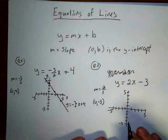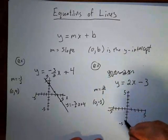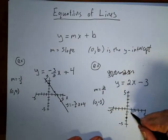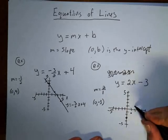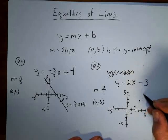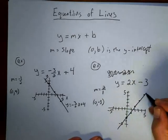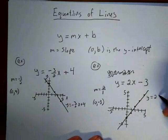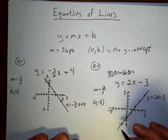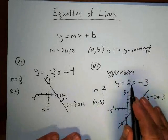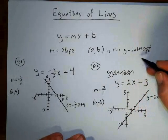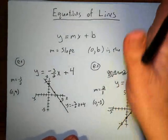To graph this, the y-intercept (0, negative 3) is your starting point. Then you go up 2 for every 1 you go over to get another point, then up 2 over 1 again, and again — and you can see that all these points lie on the same line. That line is y equals 2x minus 3. So a negative slope goes downward and a positive slope goes upward. The bigger the slope — like if it were 10 instead of 2 — the steeper the line.